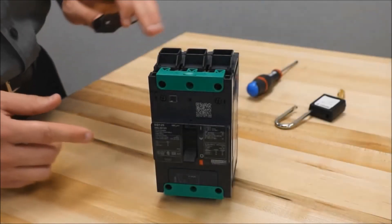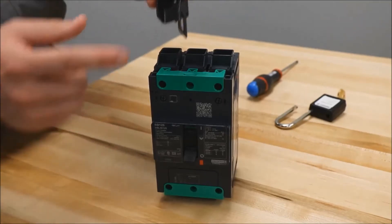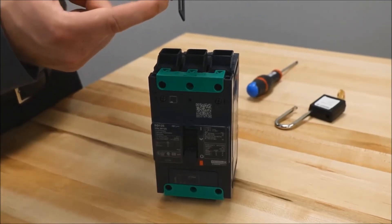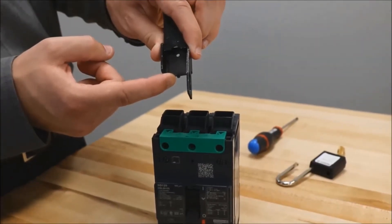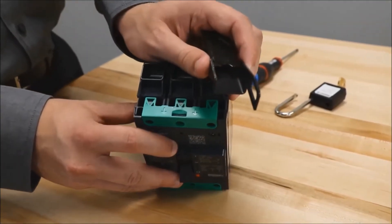First, make sure the breaker is in the off position. Then you will place the device onto the breaker by sliding this tab into this slot on the breaker.